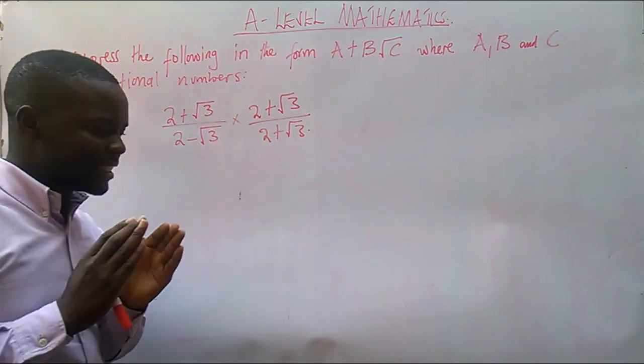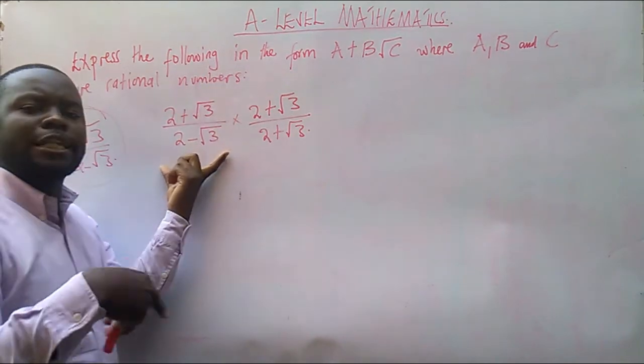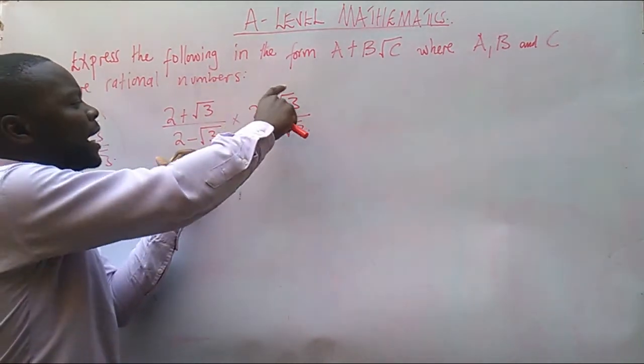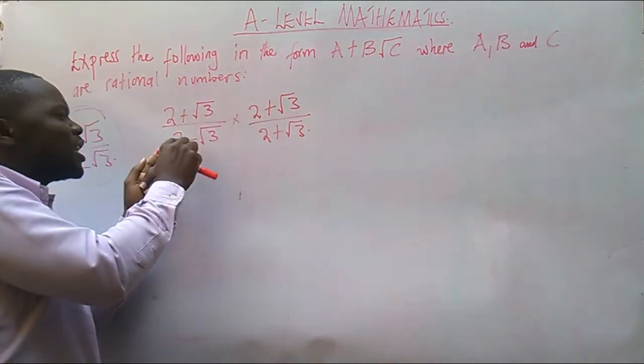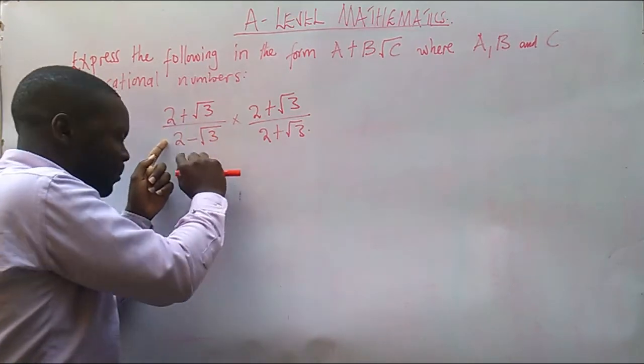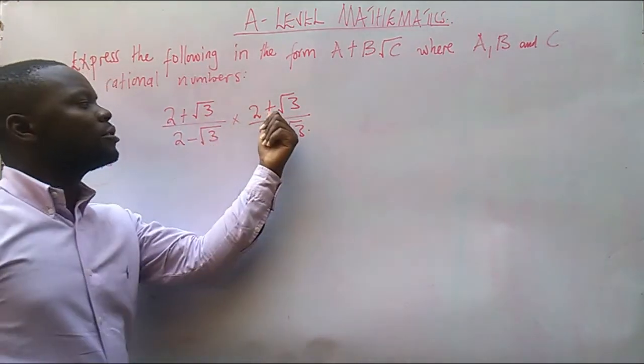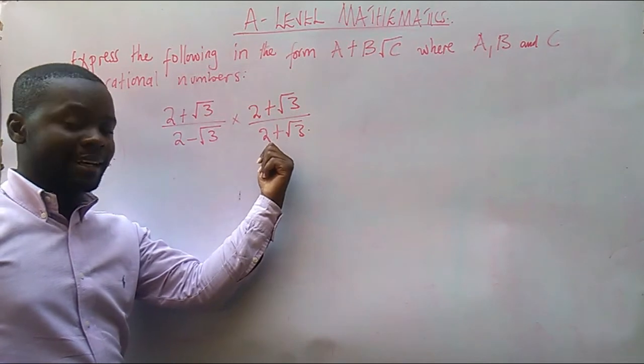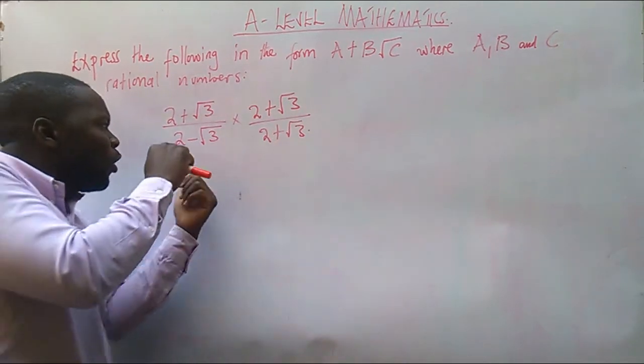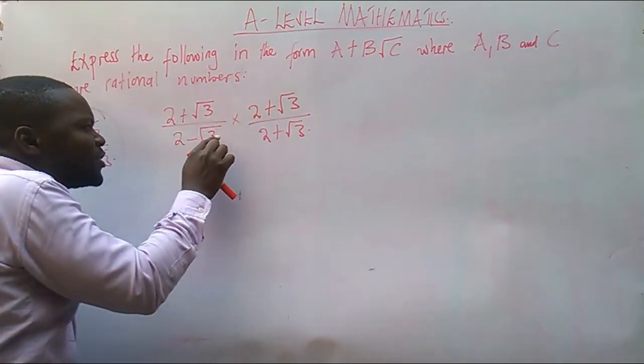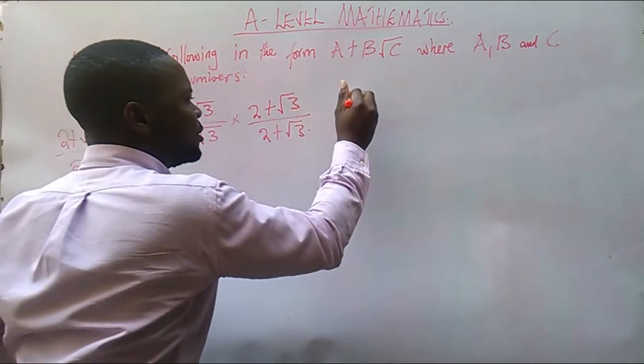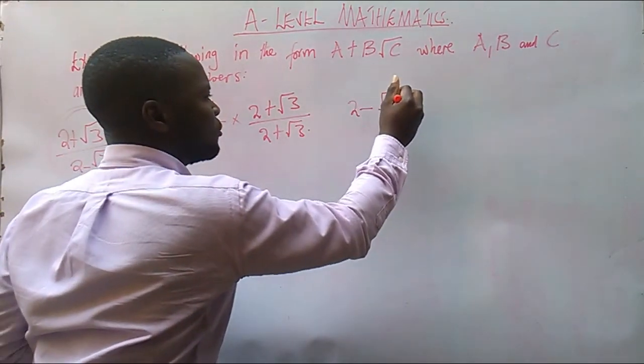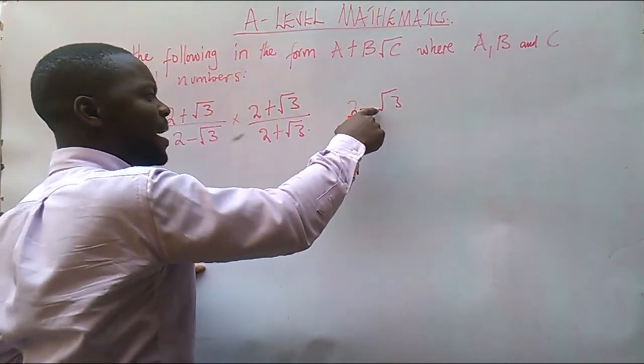So this simply means that when you are looking for a number or the expression that you must multiply here, just make sure that you take the same denominator, but put or insert a different sign here. So I took 2 minus root 3, this is 2 minus square root of 3. Now instead of writing minus, I replace it with positive, with a positive sign.